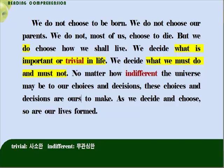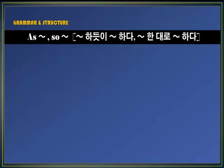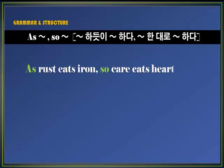'As we decide and choose, so are our lives formed.' 'As'와 'so'를 표시해 두세요. 무엇이 무엇뭐한대로, 무엇이 무엇뭐하다. 'As...so' 구문은 무엇뭐하듯이, 무엇뭐하다, 혹은 무엇뭐한대로, 무엇뭐하다로 해석해 주시면 됩니다. 예를 들어 'As rust eats iron, so care eats the heart', 녹이 쇠를 갉아먹듯이, 근심이 마음을 갉아먹는다. 또 'As you sow, so shall you reap', 당신이 씨를 뿌린 대로 당신은 거두게 될 것이다. 우리가 결정하고 선택하는 대로, 우리의 삶이 만들어진다.